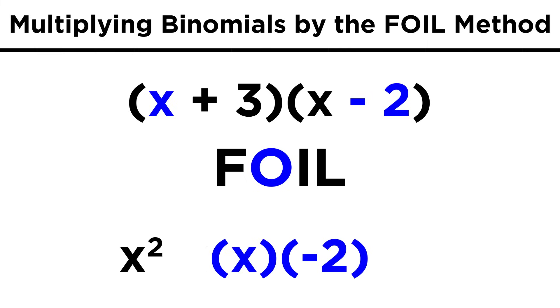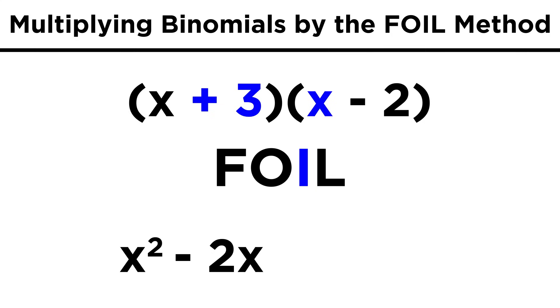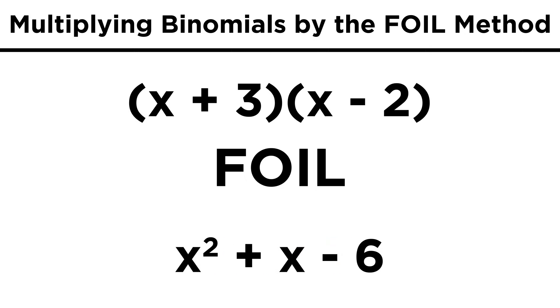Then we do the outer terms, x times negative two, or negative two x. Then the inner terms, three times x, or three x. And finally we do the last terms in each binomial, or three times negative two, which is negative six. That gives us x squared minus two x plus three x minus six, and we can combine like terms to get x squared plus x minus six.